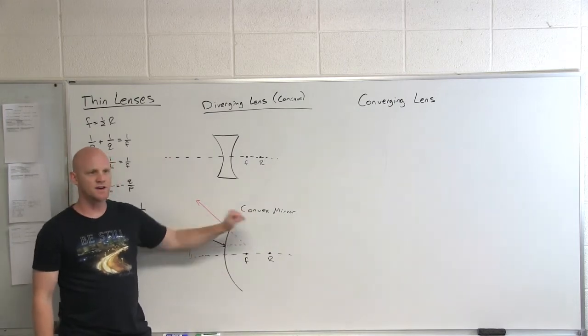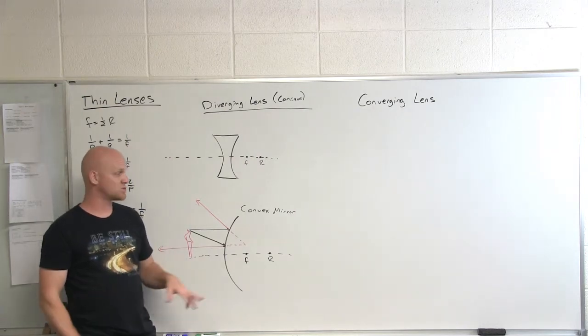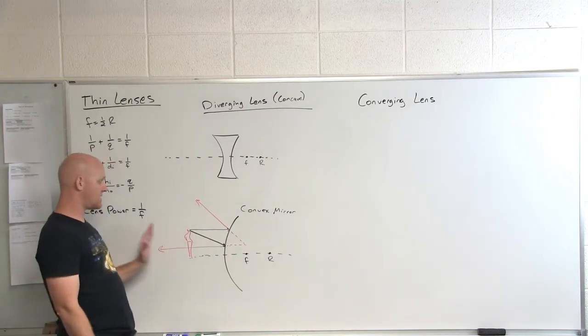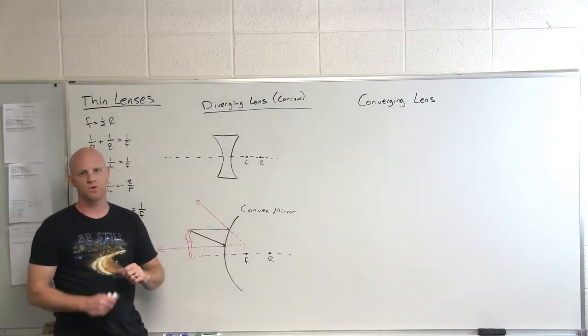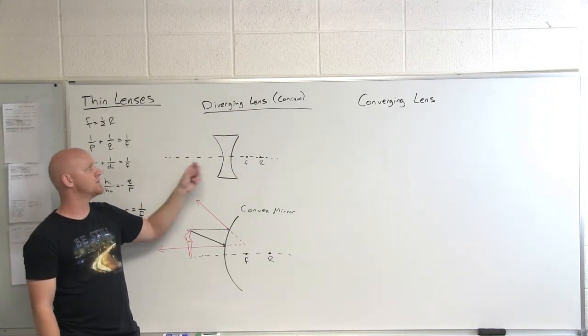So tell me, what did we learn with this convex mirror? What kind of images do we get with a convex mirror? Upright virtual always? Yeah, it doesn't matter where the object is, you will always get an upright virtual image. We're going to find out that the same thing is going to always be true with the diverging lens.